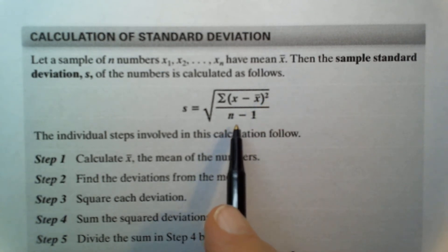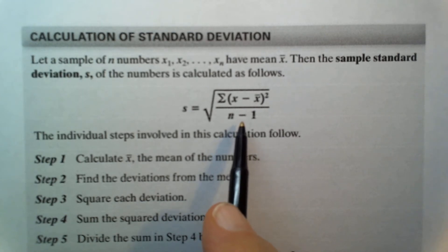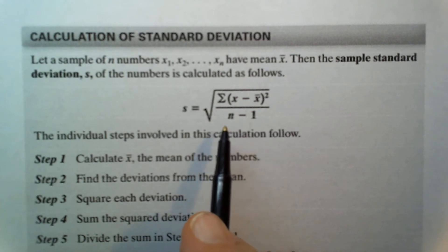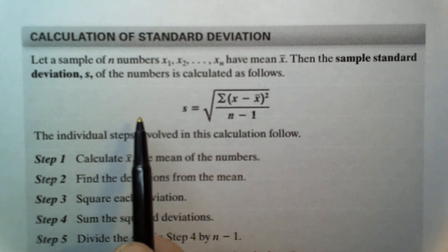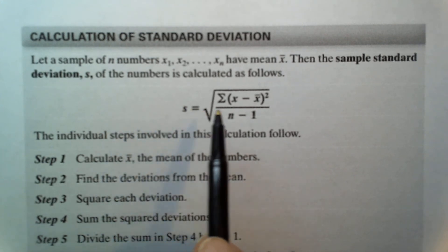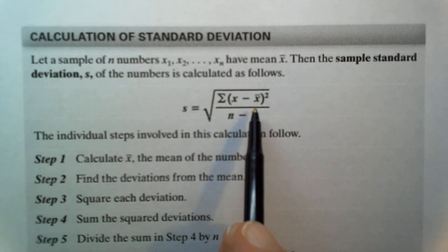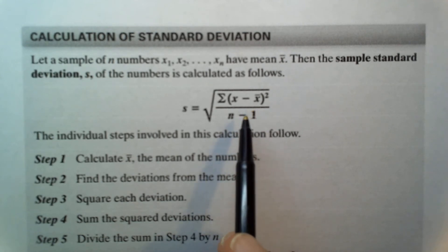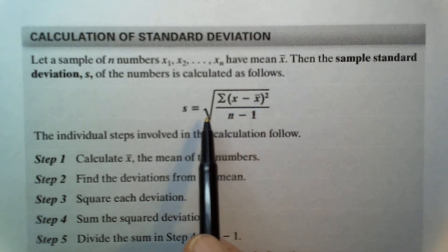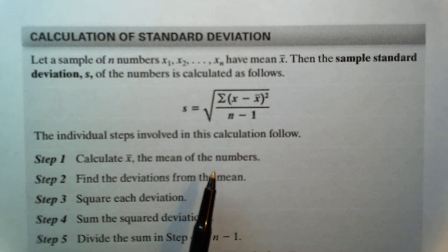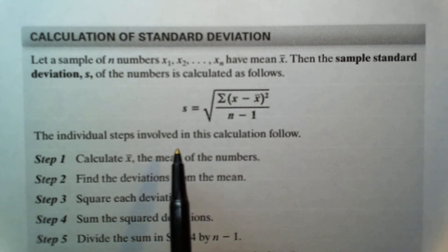It looks a bit complicated, and in reality it is somewhat complicated, but I will show you exactly how this is done. This approach makes use of all the data values, because to get the mean you have to look at all the data values. By subtracting each data value from the mean, squaring it, and so on, you get a much better representation of the spread — the standard deviation.